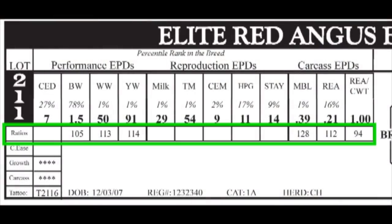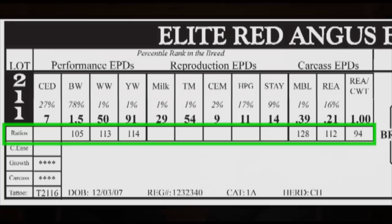If you carry up to the next step, we discuss ratios. Ratios are great for comparing calves that are in the same contemporary group. However, you cannot accurately compare ratios on a calf from contemporary group A to a calf in contemporary group B, because those environmental differences still exist.